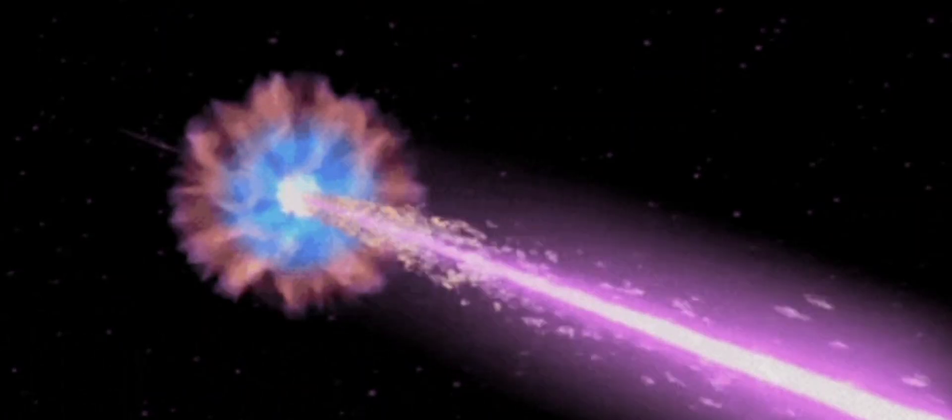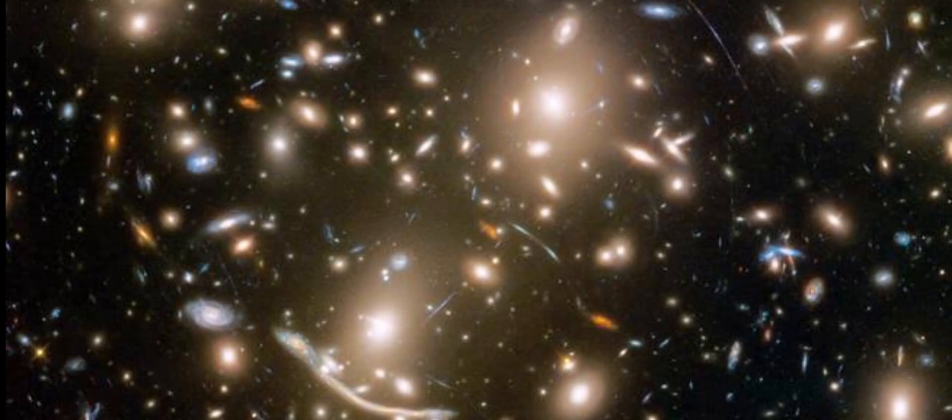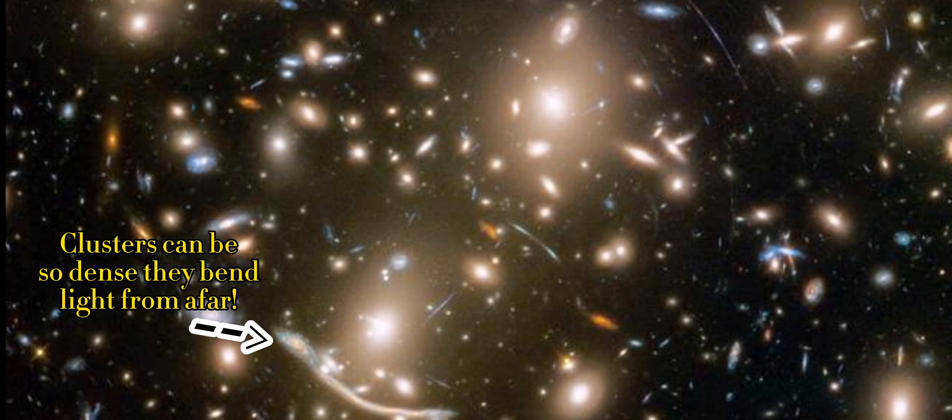Gamma ray bursts are thought to be a good indication of where huge masses of stuff lie in the universe, because big stars tend to congregate in denser neighborhoods.